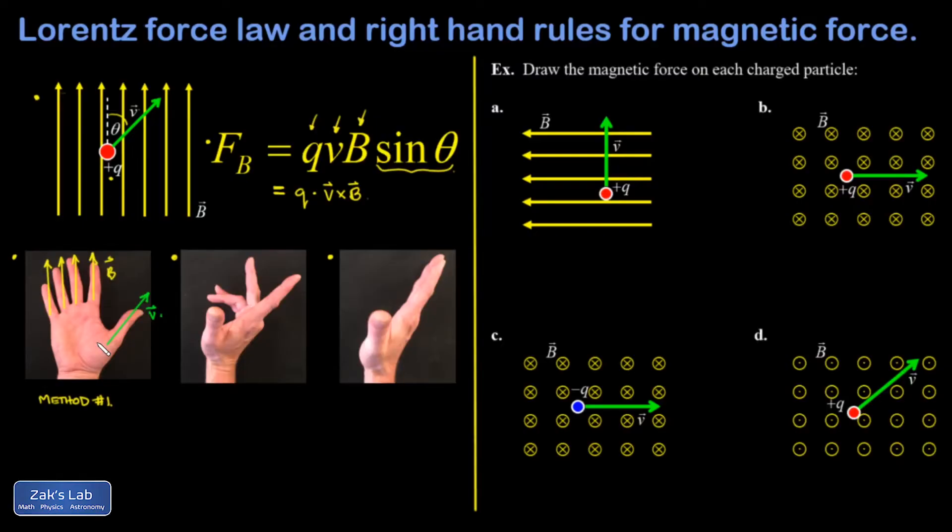This introduces a complication. Because the magnetic force is so truly three-dimensional, we need a new notation for vectors that point in and out of the page. So real quick, this is what the notation is. If you see a dot with a circle around it, that means out of the page.